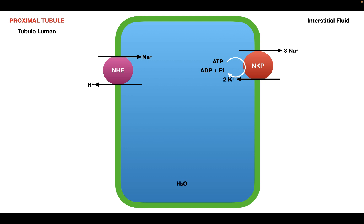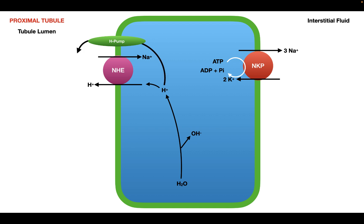In the cytosol, we have water, and this water can dissociate into hydronium ions and hydroxide ions. The hydronium ions can be released into the tubule lumen through two ways: the first is through the sodium-hydrogen exchanger, and the second is through a V-ATPase or proton pump, which pumps protons out into the tubule lumen using the energy released by ATP hydrolysis.